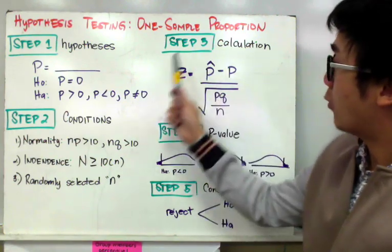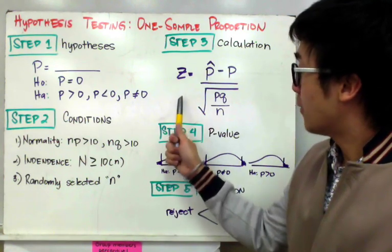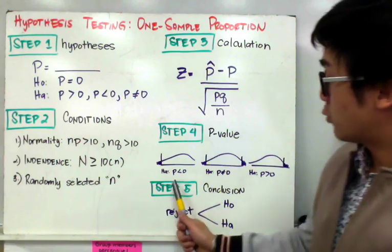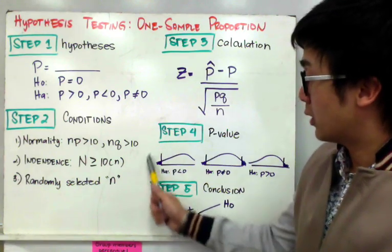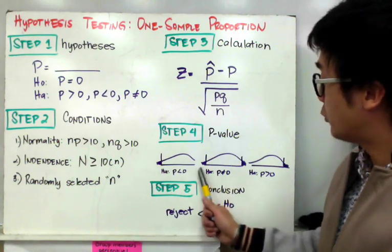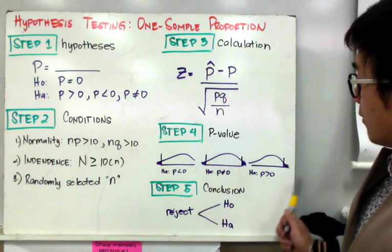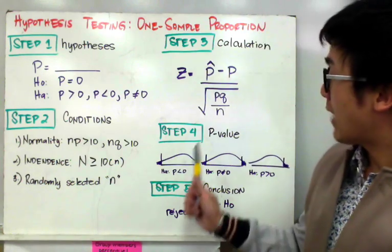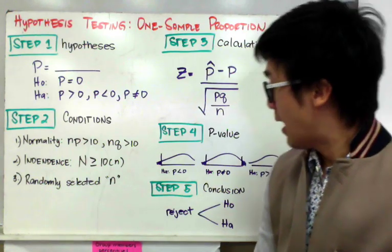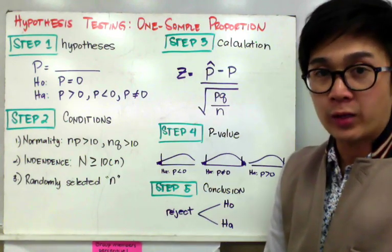Once we have found our test statistic, we compare our z using the p-value, which may come in three forms: a left-tailed test for p less than zero, a two-tailed test for p not equal to zero, and a right-tailed test for p greater than zero. We then compare the p-value to our significance level of 0.01, 0.05, or 0.10 to write our conclusion: either reject or not reject the null hypothesis.